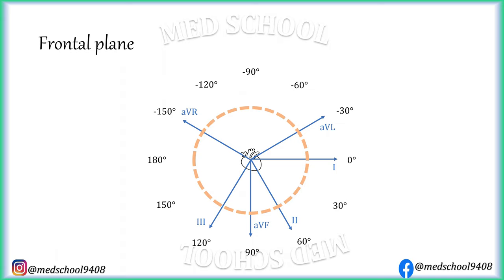QRS vector is normally directed between 40 to 60 degrees in the frontal plane. Let's consider a vector directed toward 60 degrees. This vector is directed toward the positive pole of lead V2, hence lead V2 will show complete positive deflection. This vector is directed away from the positive pole of lead AVR but not completely opposite, hence lead AVR will show prominent negative deflection and small positive deflection. Lead AVL axis is placed perpendicular to the vector, hence lead AVL will show equiphasic deflection. Lead AVF axis is placed within 90 degrees to the vector, hence these leads will show biphasic deflections with prominent positive wave. Lead 1 and lead AVL are also placed laterally along with lead V5 and V6, hence lead 1 and AVL can show small Q wave.